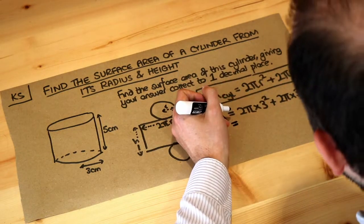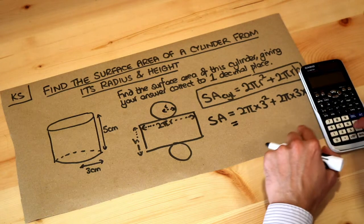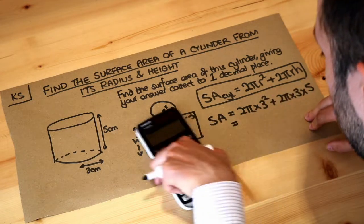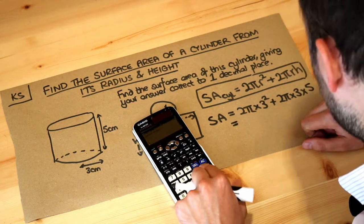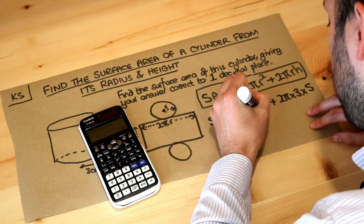Now you could shove that all in your calculator. So 2 times π, so shift π times 3 squared plus 2 times π or 2π times by 3 times 5 and it simplified it for me to 48π.